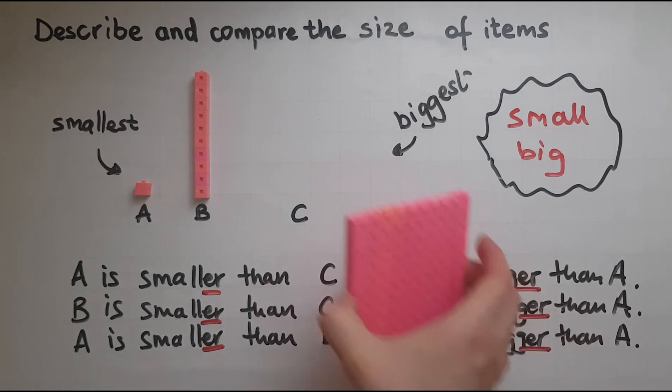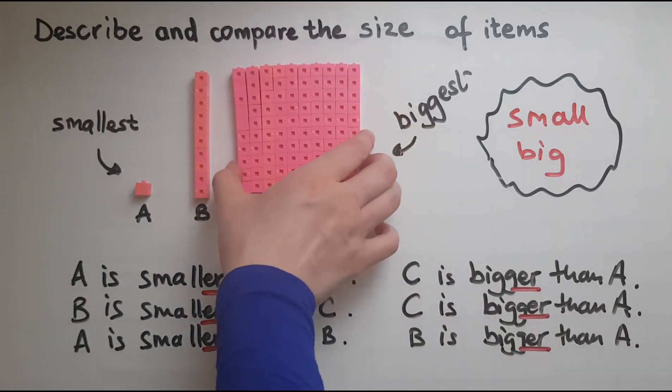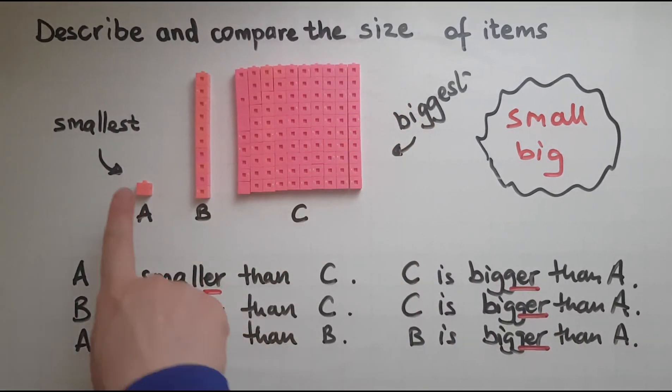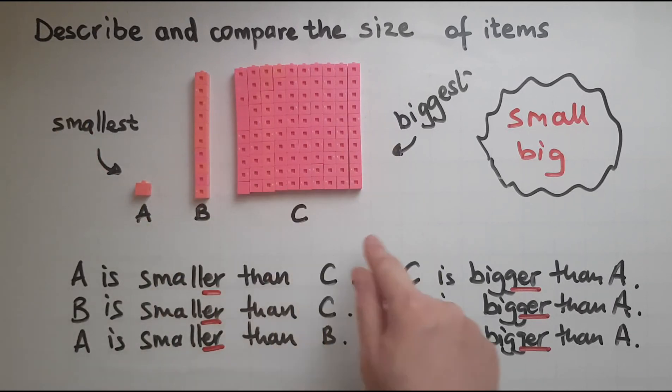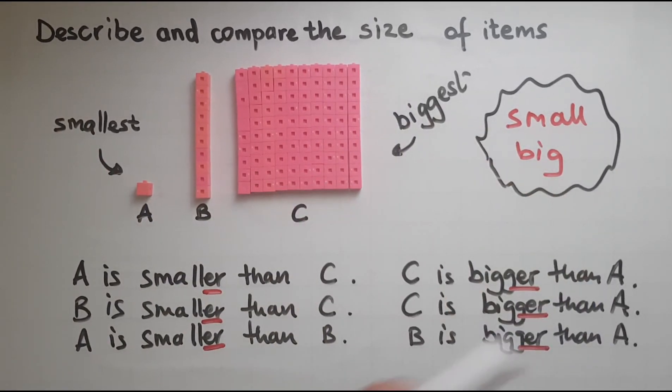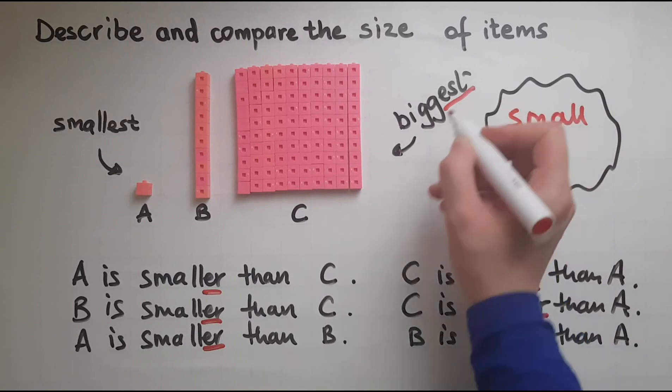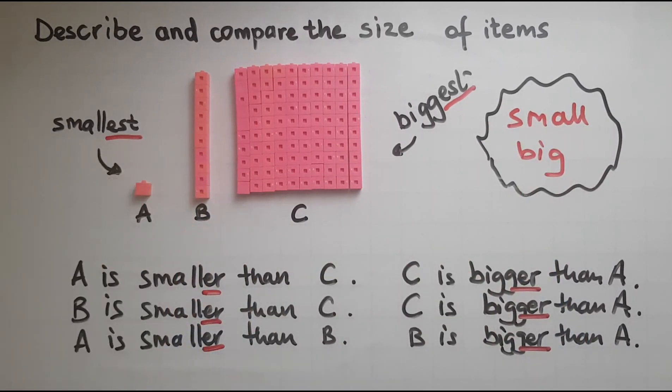Whereas if I'm comparing three of the items I say this is the smallest of them all. This is the biggest of them all. So the ending is -est. Biggest. Smallest.